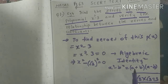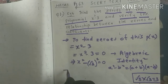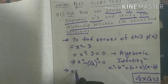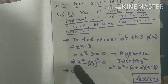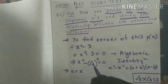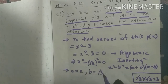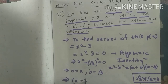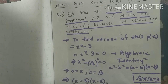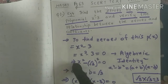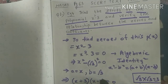Now, a squared minus b squared equals a plus b into a minus b. From this identity, comparing: a squared is x squared, so a is x. And b squared is root 3 whole square, so b is root 3. So x squared minus root 3 whole square equals x plus root 3 into x minus root 3, equals 0.